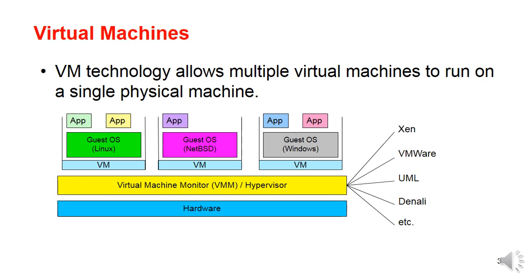Virtual Machine Monitor — VMM — is otherwise called as Hypervisor. From the diagram it is clear that it will be having the underlying hardware. Above that it will be having VMM — Virtual Machine Monitor or Hypervisor. Hypervisor can be classified as NK Hypervisor, VMware Hypervisor, UML Hypervisor and others — so many vendors are there. Above that it will be having a Virtual Machine, and above that the Guest OS.